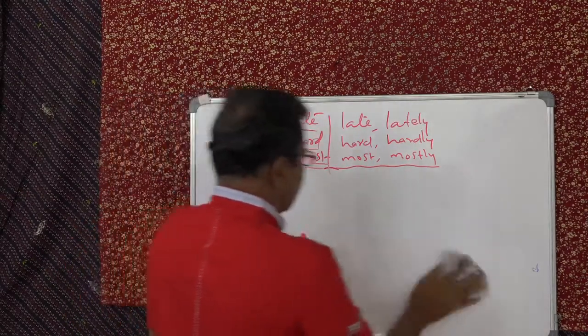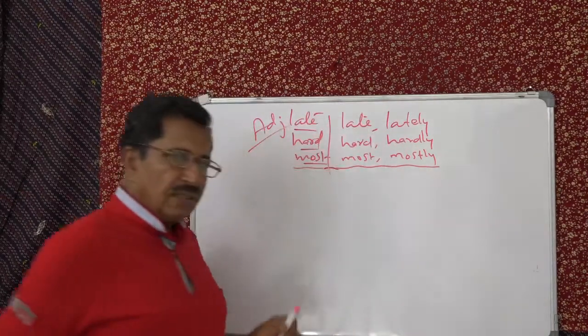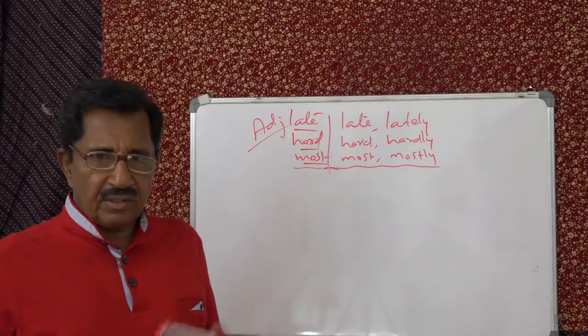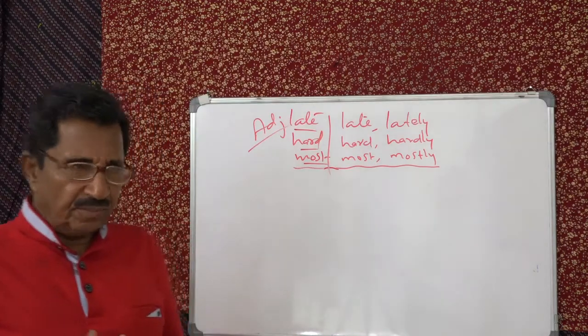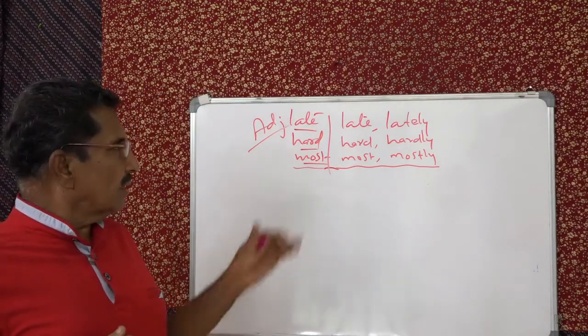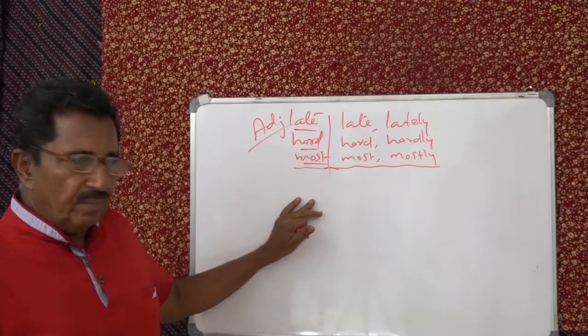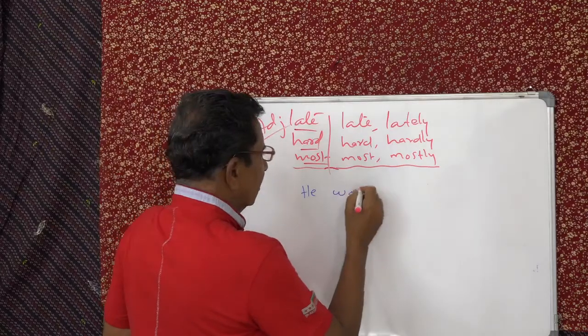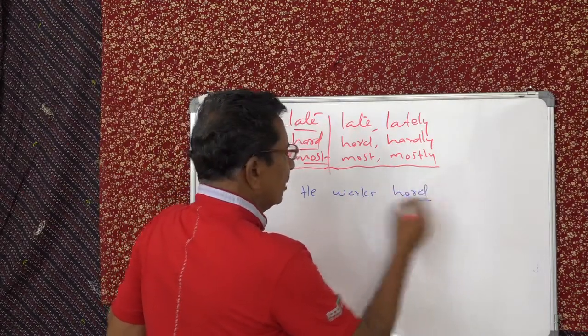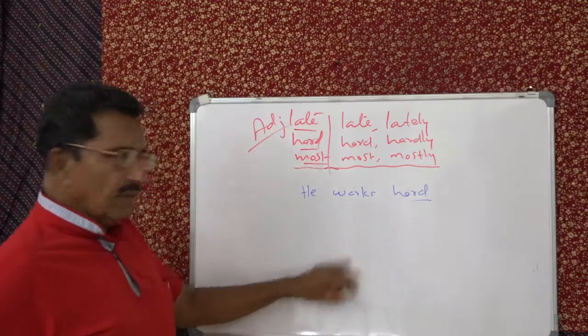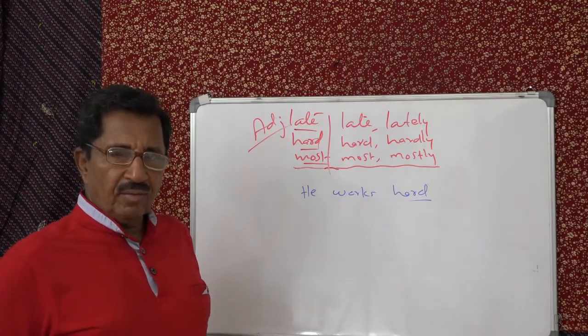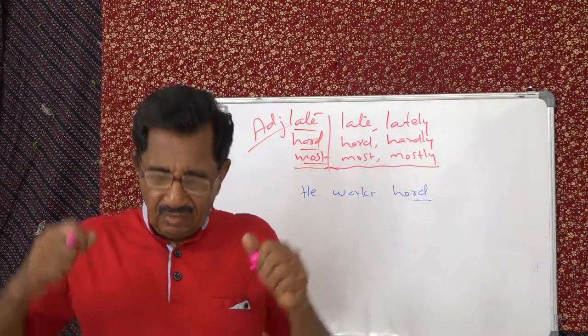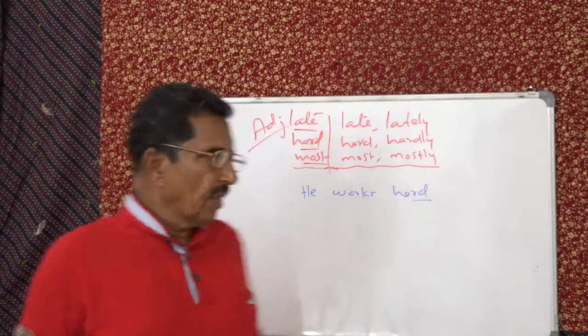Now you can see next - hard. Hard nut, that means adjective. Hard person means tough person. But when you say hard, first adverb, he works hard. He works hard. Means that's a good quality, you know. Working very hard. With all his might he is working.